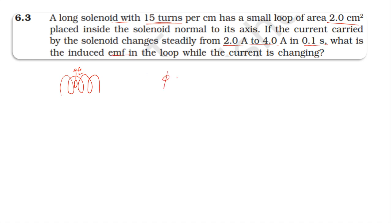The flux linking with the coil is μ₀nI·A·cos(θ). The field in the solenoid lies along the axis, and the area of the loop is parallel to the field, so θ = 0 and cos(0) = 1.